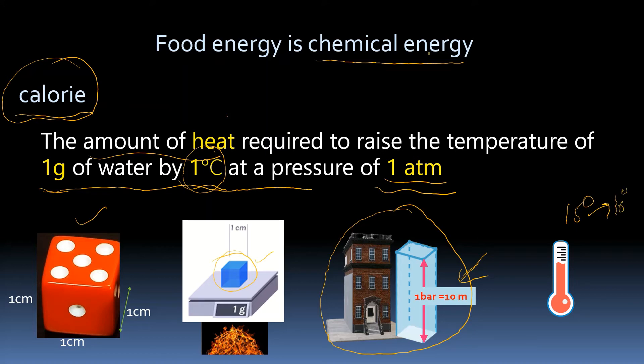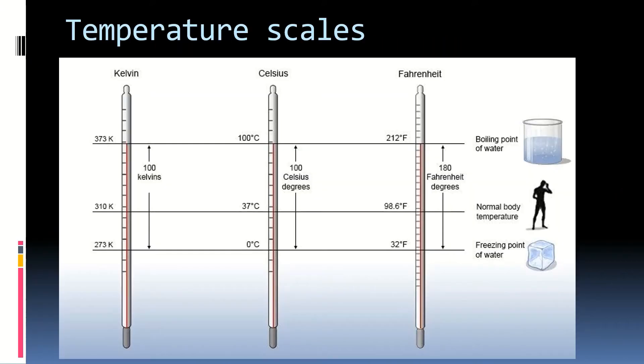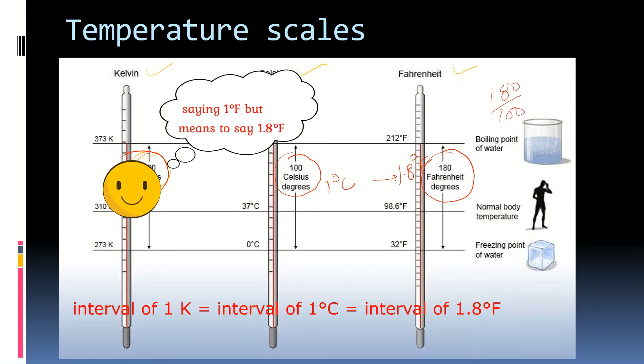To have idea of 1 degree Celsius, let's see these scales. This is a Kelvin scale, this is a Celsius scale, and this is a Fahrenheit scale. So that means if you have 1 degree Celsius here, then accordingly, 1 degree change in Celsius will be equal to 1.8 degree change in Fahrenheit.